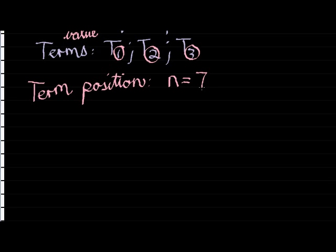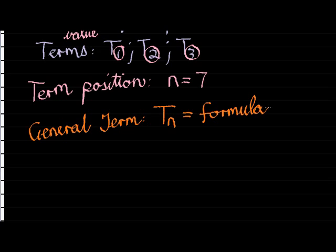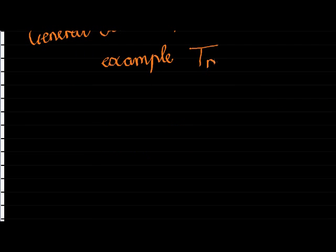Now, we also get what we call the general term. Now, this is something that most students actually get a little bit confused about. The general term is a formula containing N, the term position. And it can be used to calculate any term value given a certain position. So, let's use an example. Let's say that TN is equal to 7(N minus 1) divided by 3N squared. That's an example.